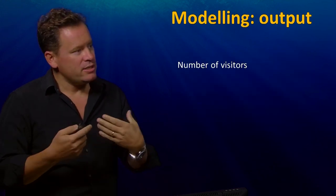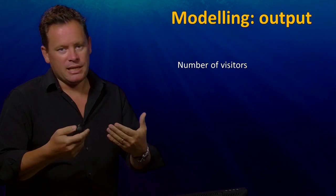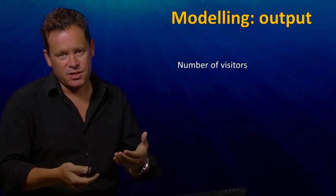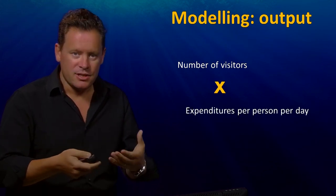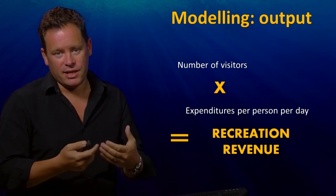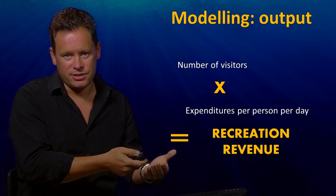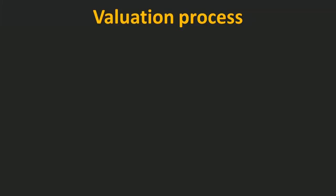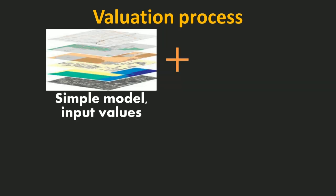In order to complete the model, you would estimate the number of visitors, look at how much those visitors are spending, and that essentially gives you a value for recreation at a particular location. To incorporate this with an evaluation process, we need to think about an appropriate strategy. We begin with simple models — I gave the example of recreation, but there are others you'd use as well — and you input those values.